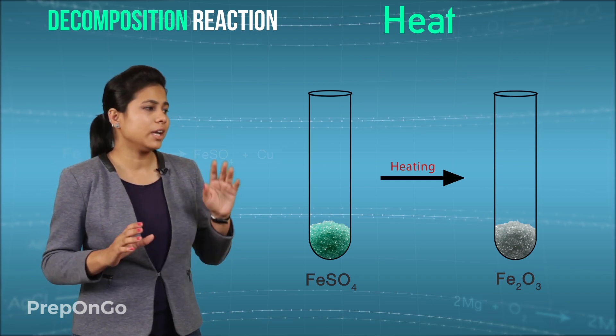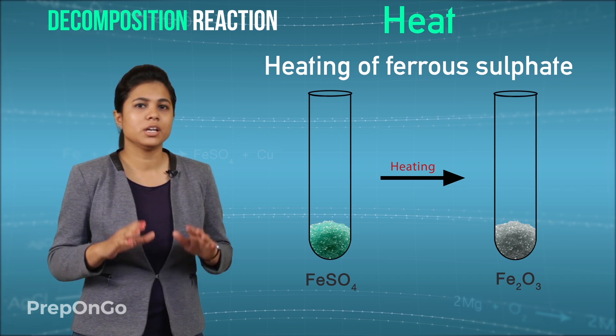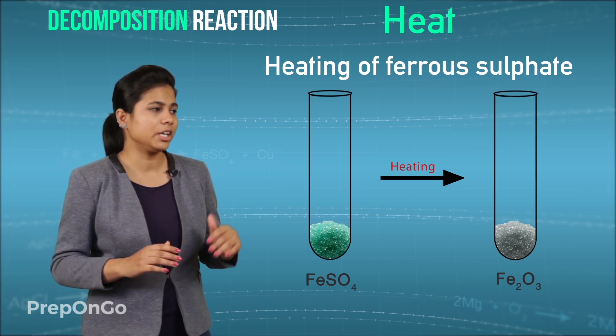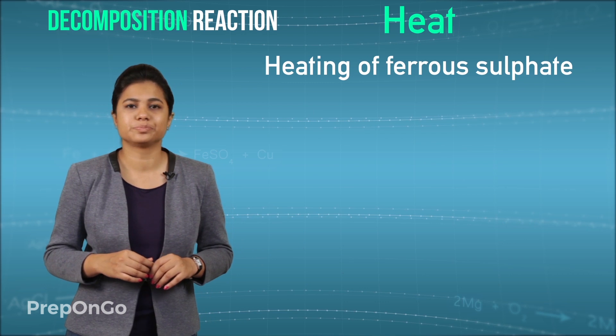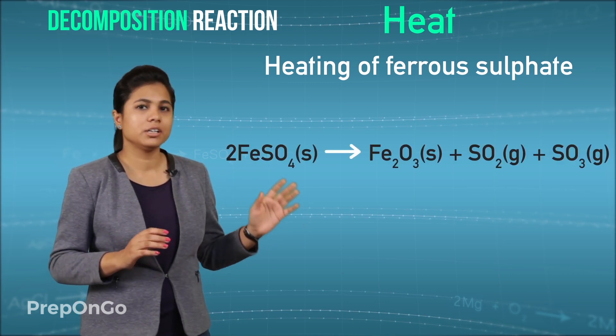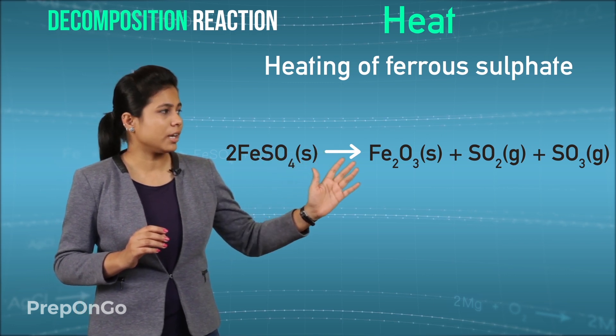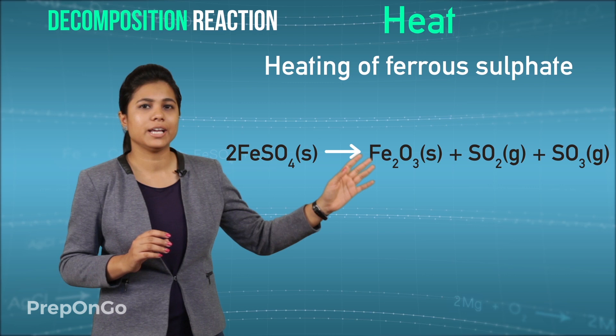The second one is heating of iron sulphate. When you heat iron sulphate it turns from light green to colorless due to loss of water. The reaction which occurs is iron sulphate when heated gets converted into iron oxide, sulphur dioxide and sulphur trioxide.